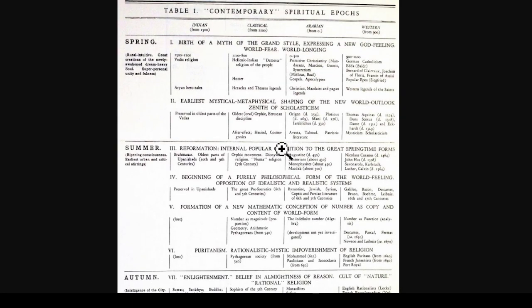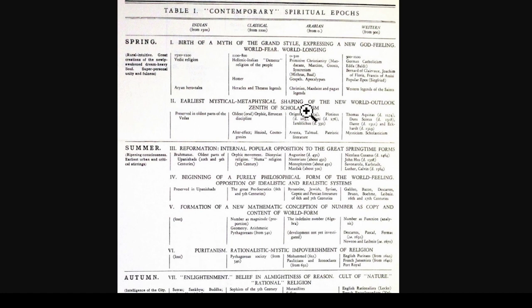The only problem with Spengler's model is that he doesn't account for the art cycle, which is totally different from the religious-philosophical metaphysical cycle he outlines — which I believe is mostly correct. In that model, from 1500 BC to about 1100, we have the Vedic religion recorded in the Rig Veda — the oldest of India's texts — along with Aryan hero tales, the earliest mystical metaphysical shaping of a new world outlook. The springtime period features a newly awakened dream-heavy soul, the birth of myth of the grand style, new God feeling, world fear, and world longing.